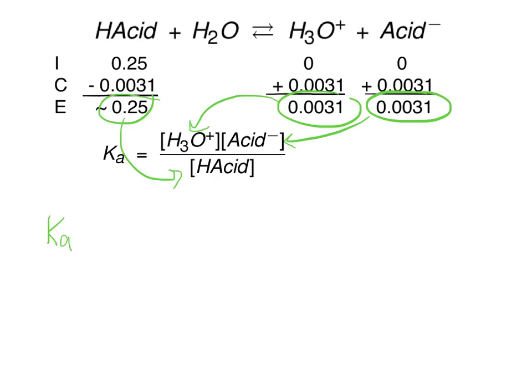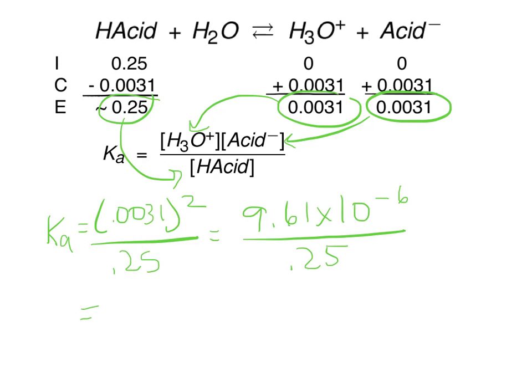So we have Ka equals 0.0031 squared over 0.25, that is 9.61 times 10 to the negative 6, over 0.25, and we get 3.84 times 10 to the negative 5.